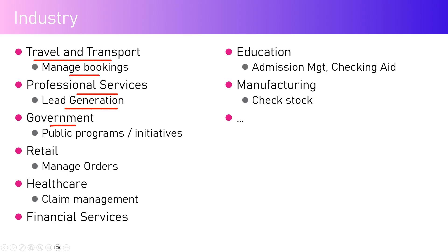For a government entity, if there are new public programs or initiatives, the agent can provide information about government benefit schemes. It can also address compliance requirements related to building management infrastructure. These are all things that government-related agents can handle.